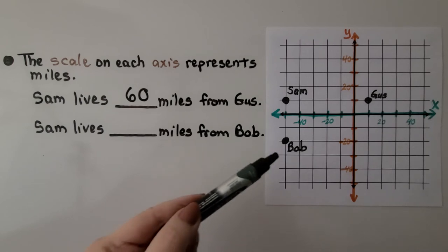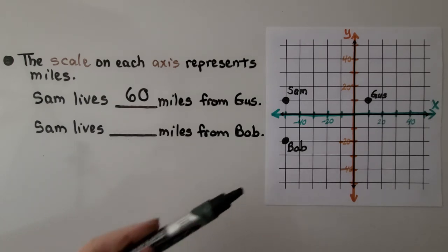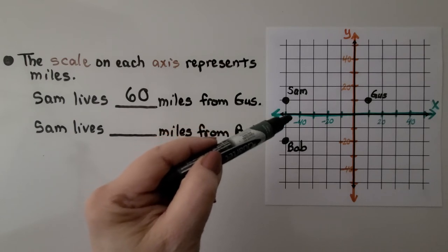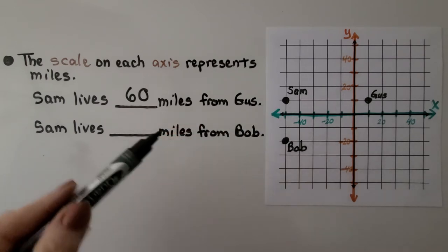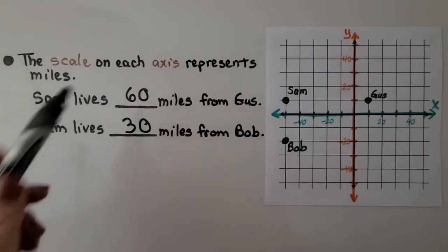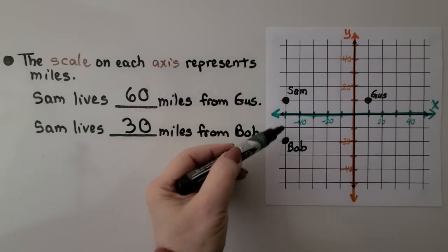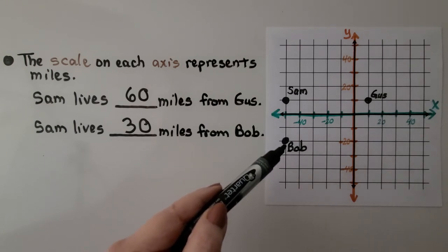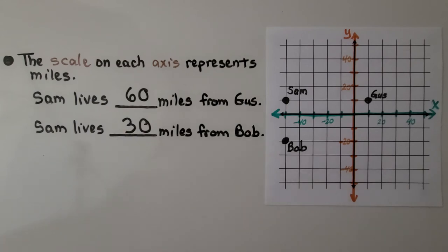And here's Bob. Sam lives blank miles from Bob. We can count each unit as 10, 10, 20, 30. He lives 30 miles from Bob. Now, remember, even though we're going into the negative, a distance is always positive. If you drive in reverse and go 2 miles, you still went 2 miles. It's a positive 2. So, distances are always positive. Even though we went down into the negatives here, heading south, it was still a positive 30.